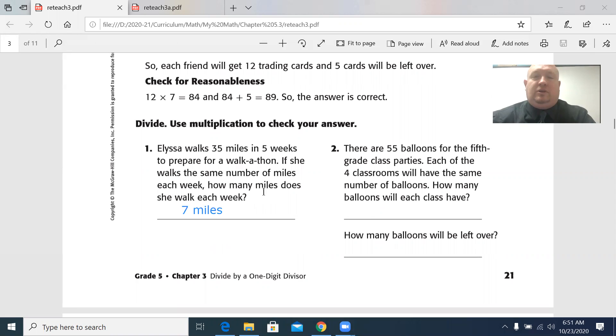So here's the problem you're going to do on your own. There are 55 balloons for the fifth grade class parties. Each of those four classrooms will have the same number of balloons. How many balloons will each class have? So you're going to need to find your dividend and your divisor. And then you're going to find your quotient by dividing using the standard algorithm. How many balloons will be left over? I'll give you a hint. There will be. That's your remainder. So instead of writing R, you could just write however many balloons.